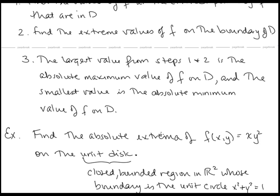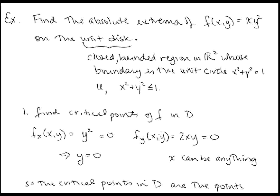Let's look at an example: find the absolute extrema of f(x, y) = xy² on the unit disk. The unit disk is the closed bounded region in R² whose boundary is the unit circle x² + y² = 1 — in other words, the domain is the set where x² + y² ≤ 1.